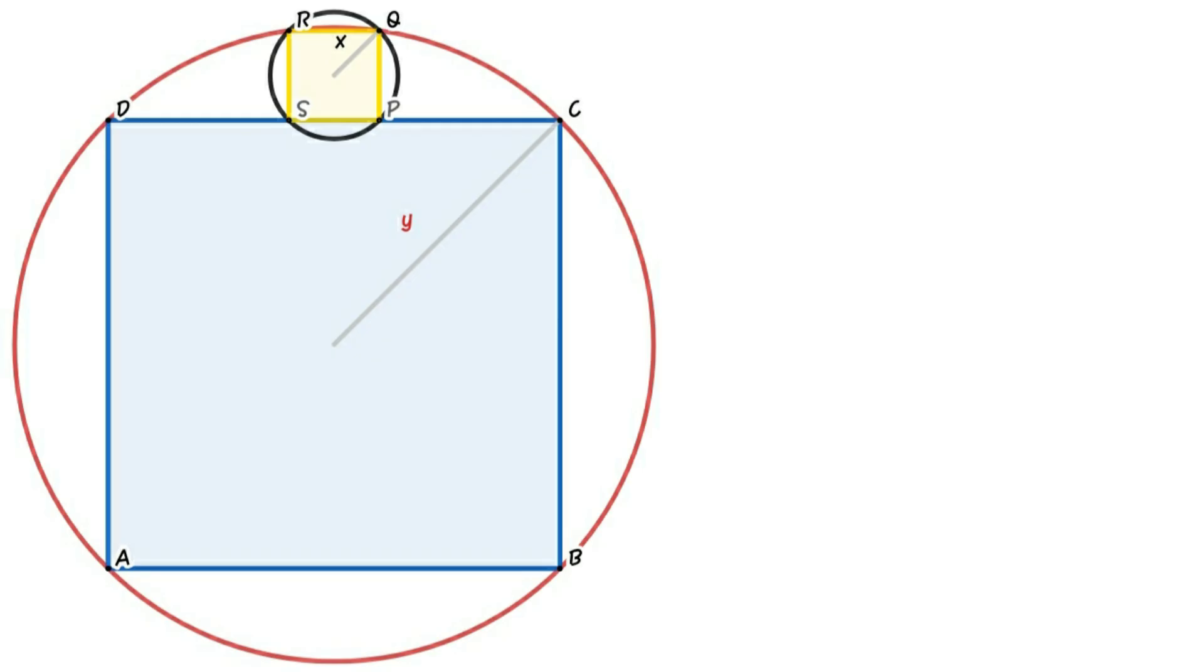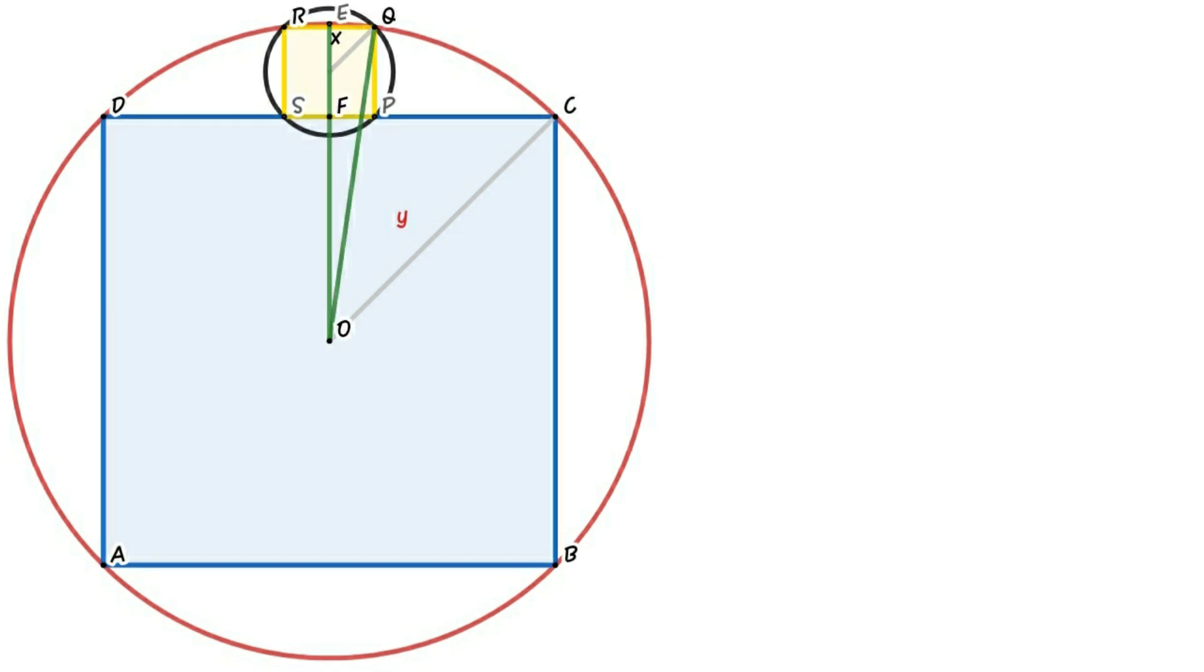Let's consider radius of bigger circle as Y and radius of smaller circle as X. From figure, connect O and midpoint of RQ. And connect OQ then form triangle OEQ.